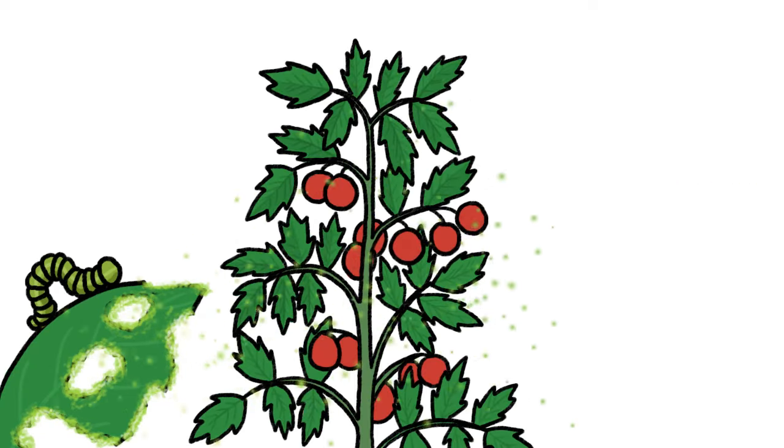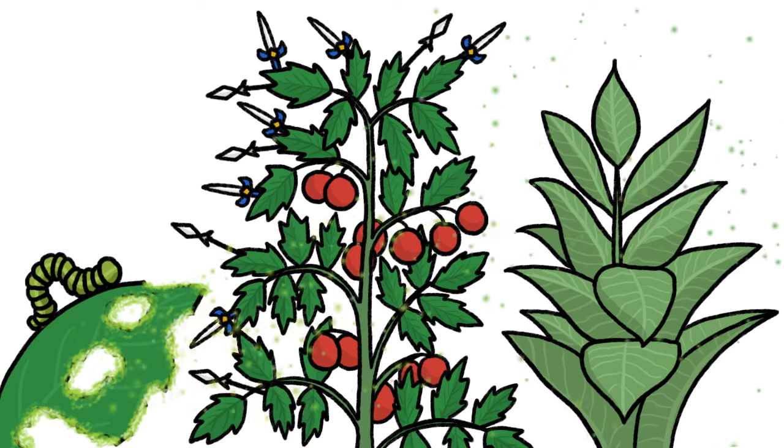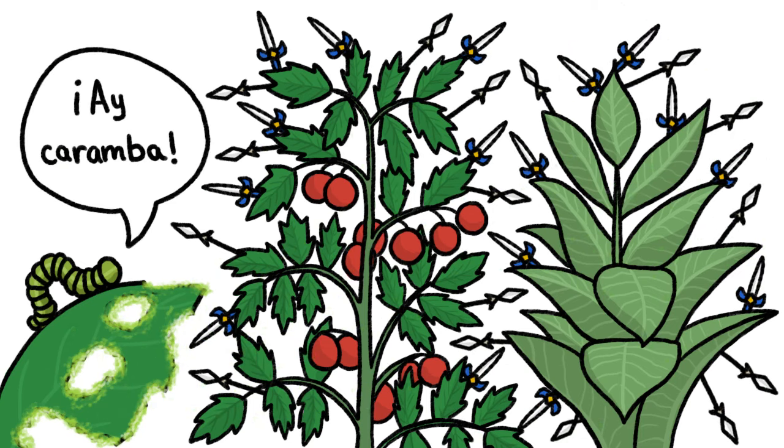The scent that corresponds to caterpillar, for example, prompts plants like tomato and tobacco to churn out bitter toxins in their leaves, making them yucky.